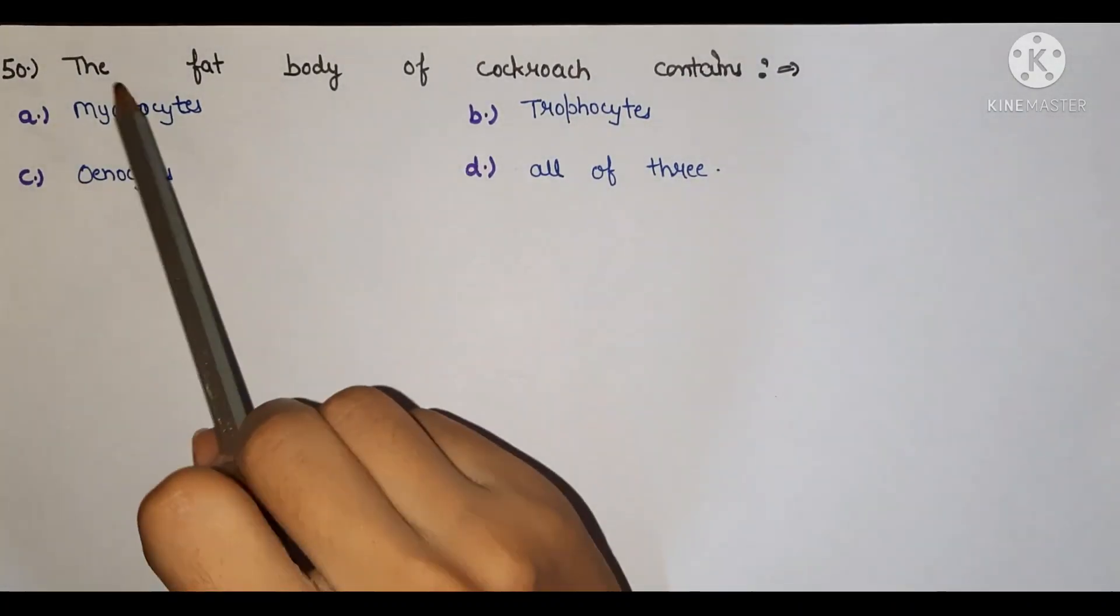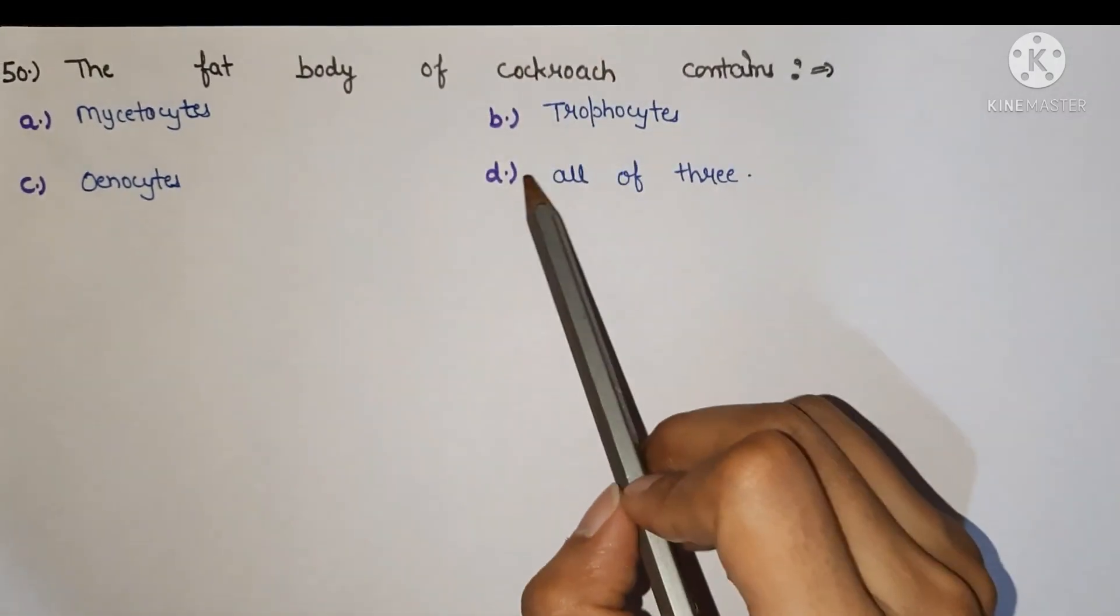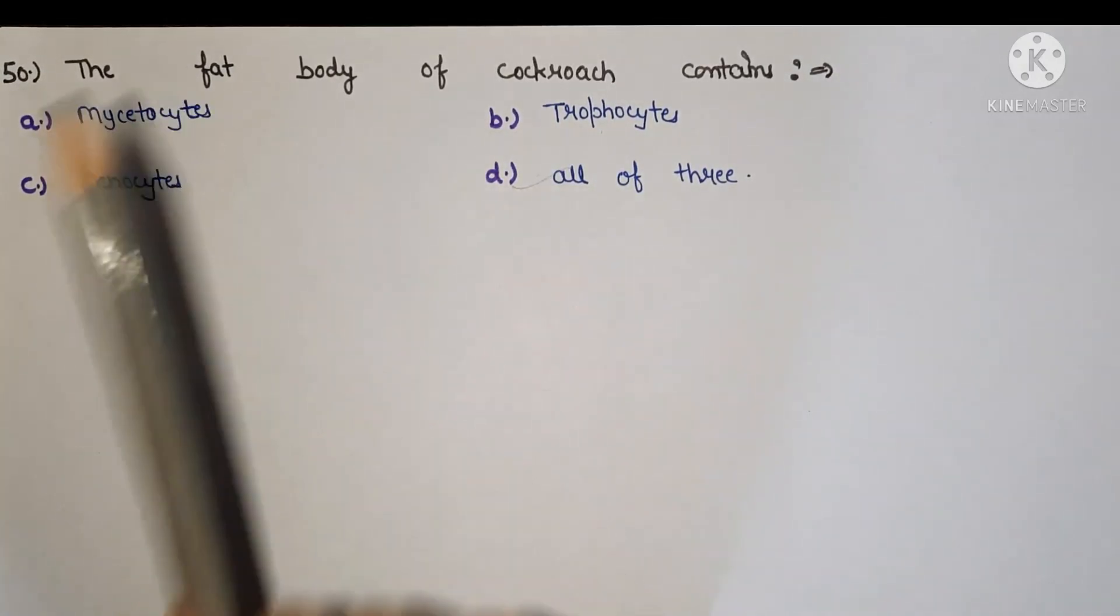Next, the fat body of cockroach contains. The right answer is all of three: trophocytes, oenocytes, and mycetocytes.